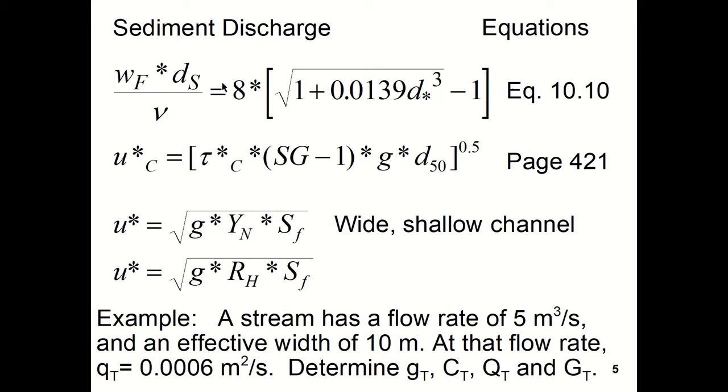So this is equation 10.10 in the textbook by Sturm. And U star C is the critical shear velocity. You can see it's the dimensionless critical shear stress equation, which has been rearranged.